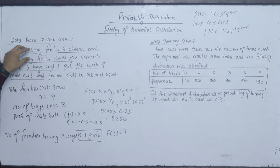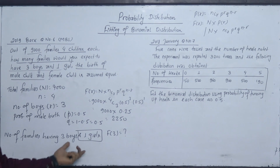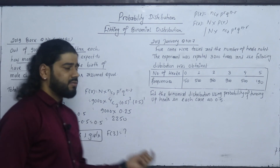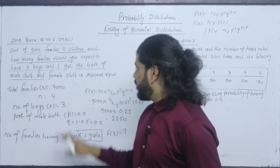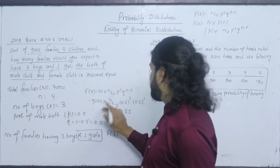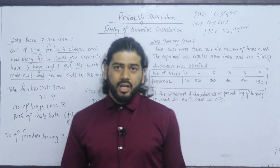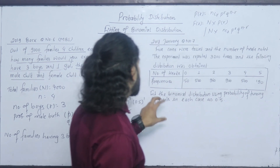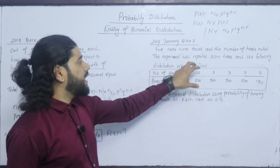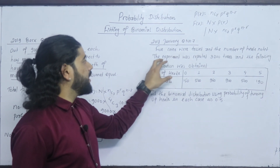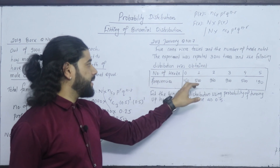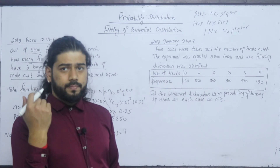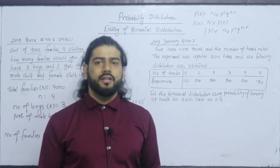Find the number of families having at least 3 boys. Five coins were tossed and the number of heads noted. The experiment was repeated 3200 times and the following distribution was obtained.